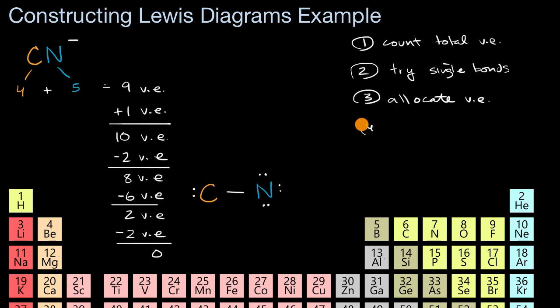So this is where we think about whether we want to have some extra bonds or higher order bonds. How can we give carbon more valence electrons? Well, what we could do is we could take some of these lone pairs around nitrogen and then use them to turn this single covalent bond into a higher order bond.